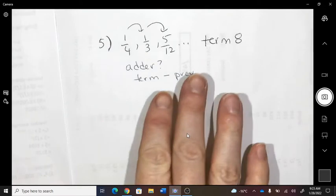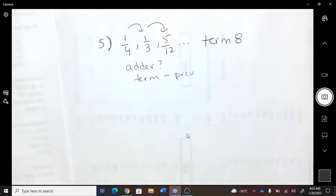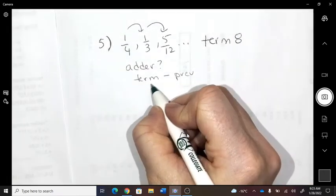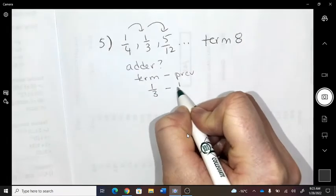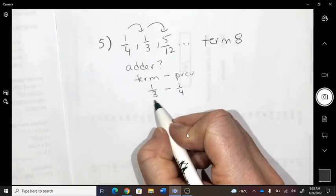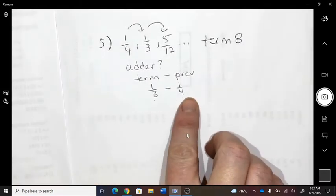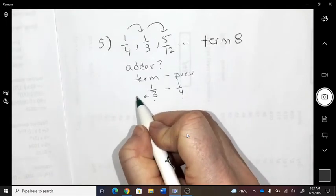Okay, what do you want to do? We could go the third subtract the second, or the second subtract the first. Doesn't matter. I'm going to go one third subtract one quarter then. How do we subtract fractions? We need the bottoms to be the same, common denominator. So a three and a four, I'm going to turn them both into 12.